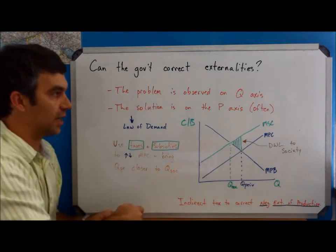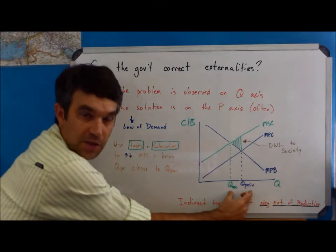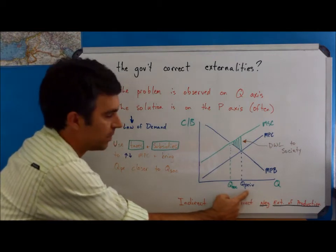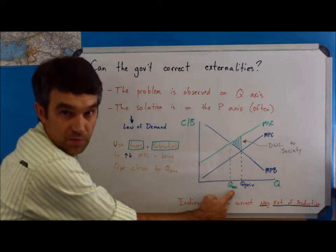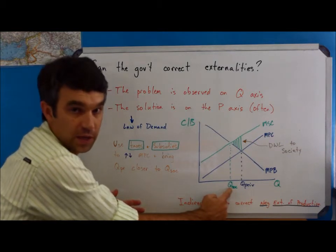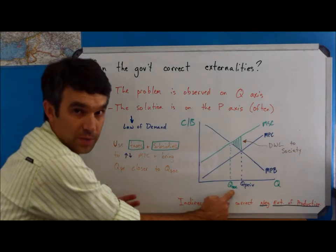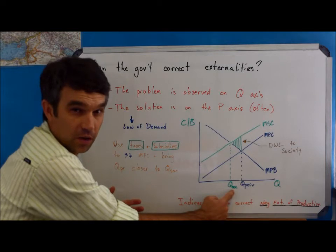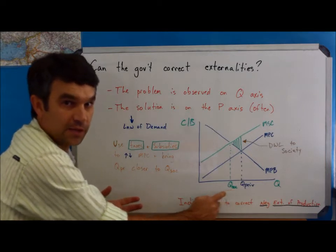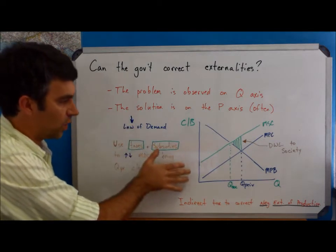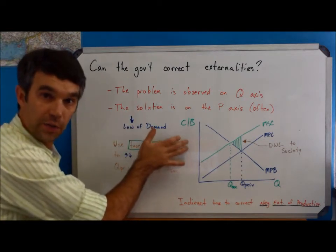When we look at the problem of externalities, the problem is always down here on the Q-axis, that the private market, in blue, is producing more than what the larger society finds optimal. This would be our point, QSocial, would be our point of optimal allocation or allocative efficiency, which is really our goal in microeconomics. So the problem is often on the Q-axis, typically we can find the solution here on the Y-axis.